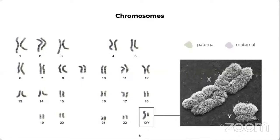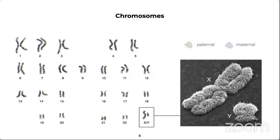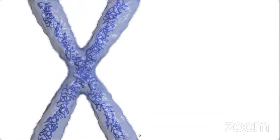DNA is tightly packed into 23 pairs of chromosomes. One chromosome comes from our mother and the other from our father. The unique structures of chromosomes keep the DNA tightly wrapped around spool-like proteins called histones. Without such packaging, DNA molecules would be too long to fit inside the cell — if uncoiled, DNA from a single human cell would stretch up to six feet. The largest chromosome, chromosome 1, contains about 8,000 genes.